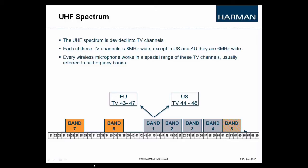What's also interesting to know is that the European TV channel has a bandwidth of 8 MHz, whereas a TV channel in the US or in Australia has only 6 MHz of bandwidth. So that might lead to misunderstandings when ordering wireless equipment or wireless microphones in diverse countries of the world.